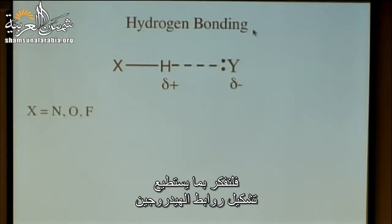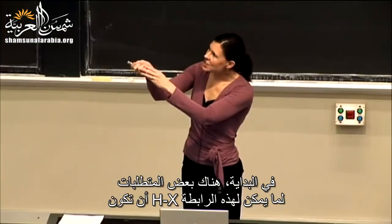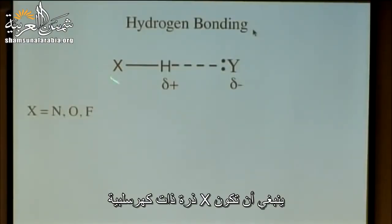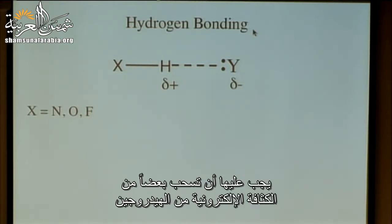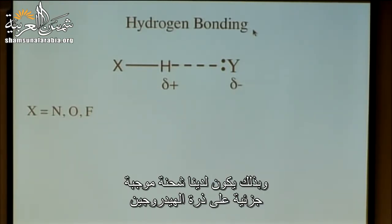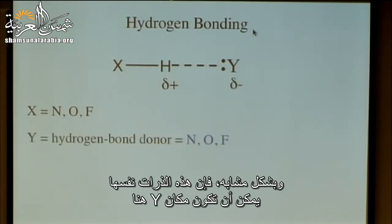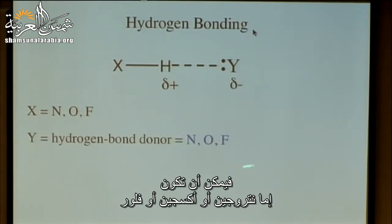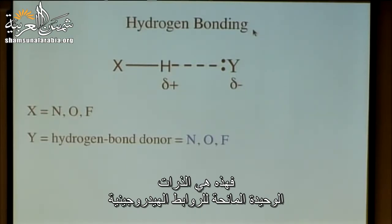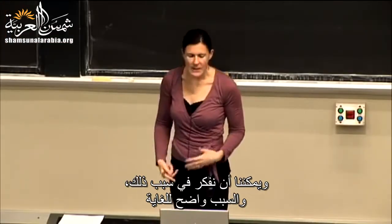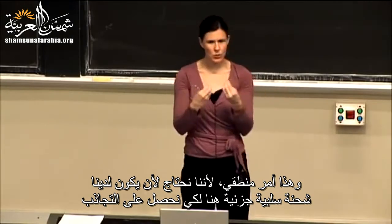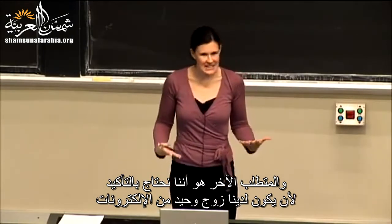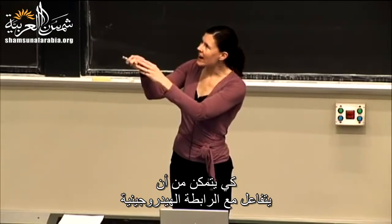For hydrogen bonds to form, the atom covalently bonded to hydrogen (X) must be highly electronegative — specifically nitrogen, oxygen, or fluorine — so that it pulls electron density from hydrogen, creating a partial positive. The hydrogen bond acceptor atom (Y) must also be electronegative with a lone pair, and must be small. These requirements explain why only N, O, and F can serve as hydrogen bond donors.